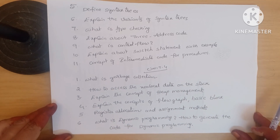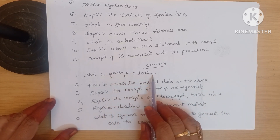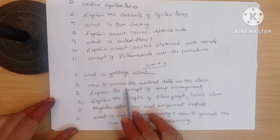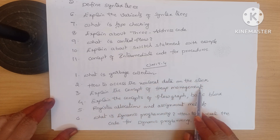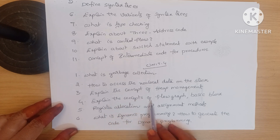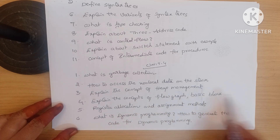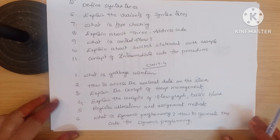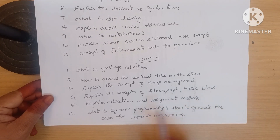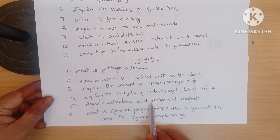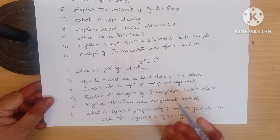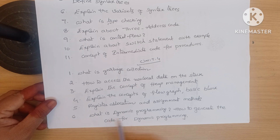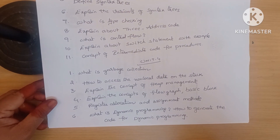Unit 4 important questions: what is garbage collection, how to access non-local data on the stack, explain the concept of heap management, explain the concepts of flow graph and basic block — define flow graph and define basic block with examples. Next: register allocation and assignment methods — explain what is register allocation and how to allocate registers. Next: what is dynamic programming and how to generate code for dynamic programming.